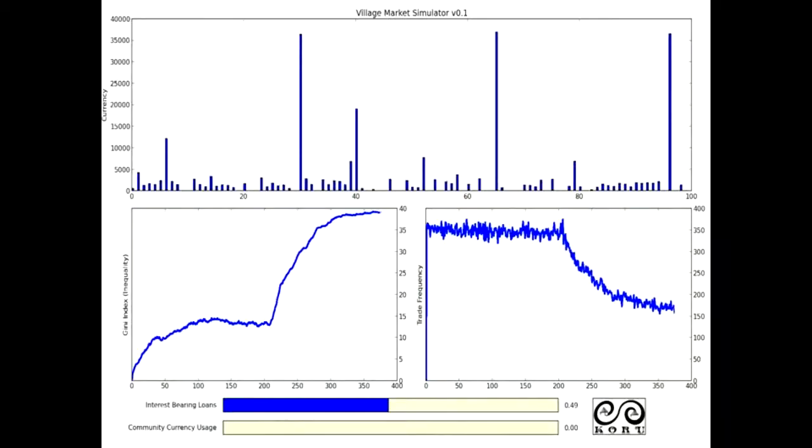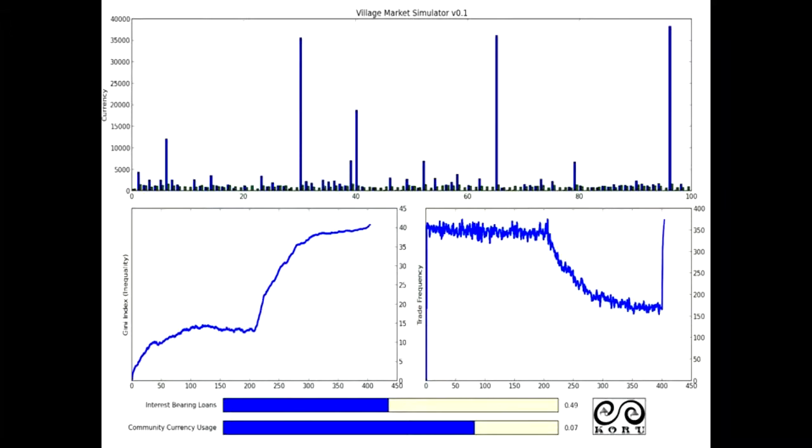Let's look at the simulation again and see what would happen when you introduce that type of currency. Here we haven't introduced it yet. And all of a sudden, here we have, now you can see a little tiny green speck next to people's balances. That represents their, what we call community currency. And using that community currency now, instead of going into debt when they need to trade something, they can use this as sort of a barter exchange.